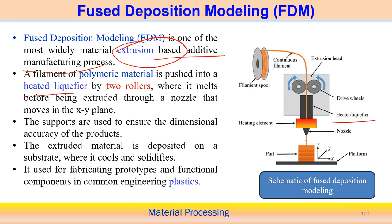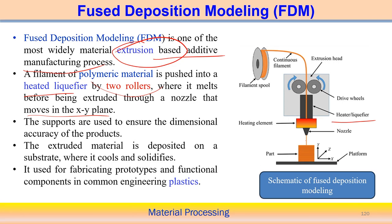The polymeric material is pushed into a heated liquefier by two rollers, which is why it is called an extrusion-based additive manufacturing process. The nozzle moves in the XY plane to deposit material at the desired position. Supports are used to ensure dimensional accuracy of the product. The extruded material is deposited on a substrate, and XY movement control of the nozzle is used for fabricating prototypes and functional components in engineering plastics.